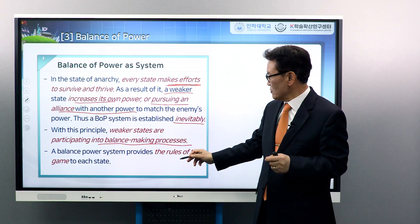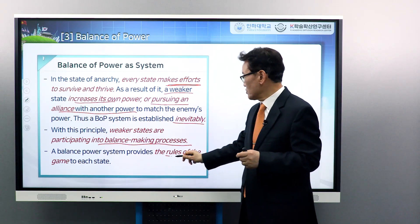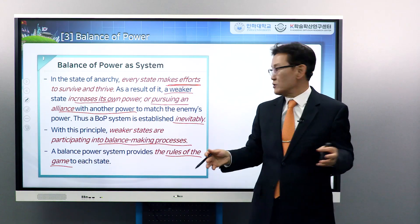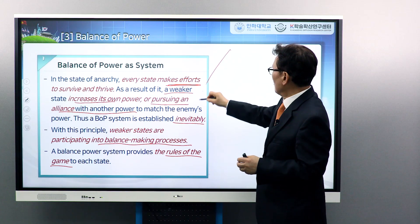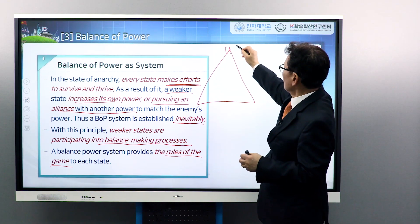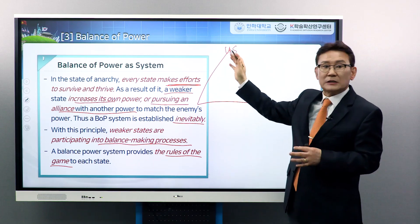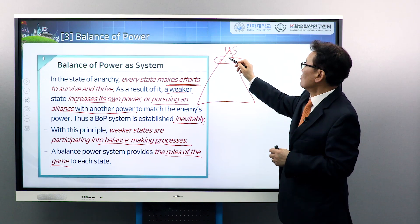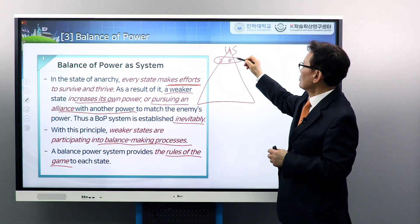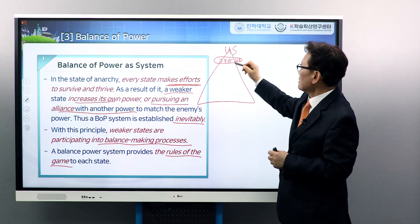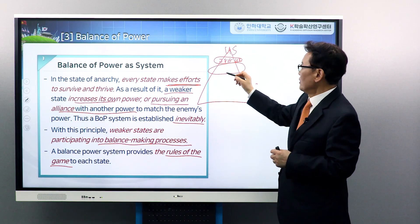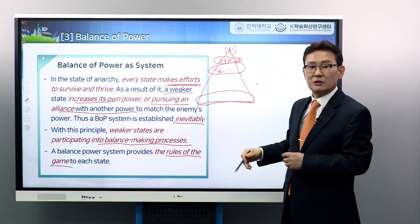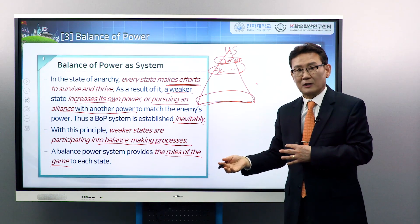Balance of power system provides the rules of the game to each state. If we look at the power pyramid of world politics, obviously the US is at the top point. In the second tier of countries, perhaps Japan, Germany, UK, or France. And third tier, probably South Korea is here, and third tier countries, and the developing countries here.